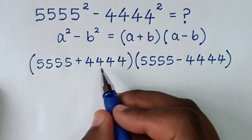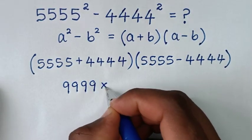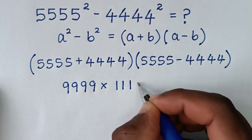Then in the next step, this plus this equals 9999, then times this minus this, which is 1111.